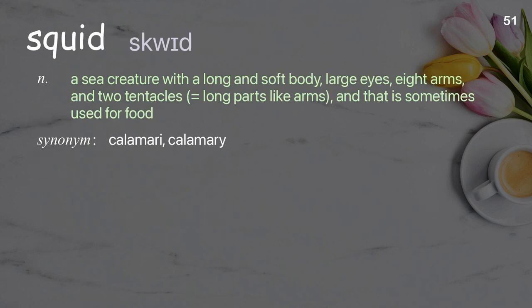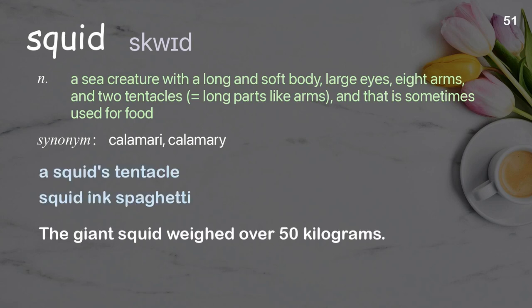Squid. A sea creature with a long and soft body, large eyes, eight arms, and two tentacles, sometimes used for food. Examples: a squid's tentacle, squid ink spaghetti. The giant squid weighed over 50 kilograms.